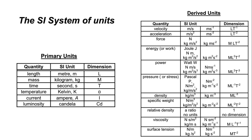For primary units, we need to know that we have seven of them under the standard SI system of units. The primary units listed in this table include length, mass, time, temperature, current, and luminosity — these are the seven primary units that we need, and from these seven we can come up with derived units.